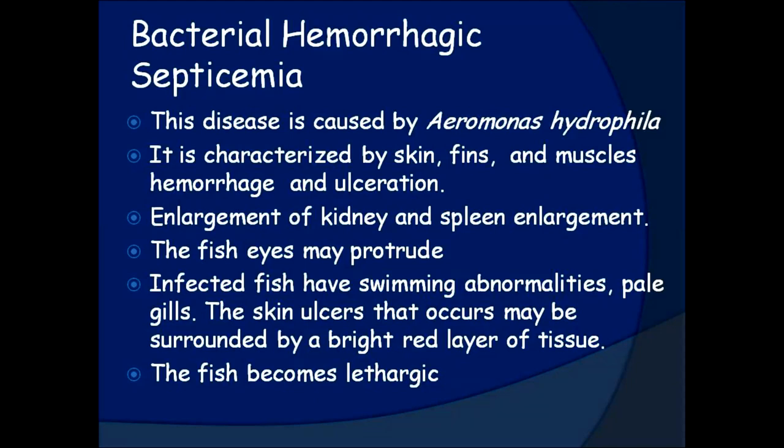Bacterial hemorrhagic septicemia. This disease is caused by Aeromonas hydrophila. It is characterized by skin, fins, and muscle hemorrhage and ulceration, along with enlargement of the kidney and spleen. The fish eyes may protrude. Infected fish have swimming abnormalities and pale gills. The skin ulcers that occur may be surrounded by a bright red layer of tissue. The fish becomes lethargic.